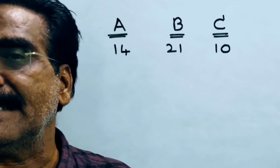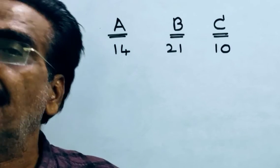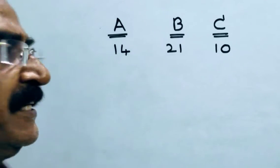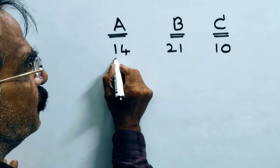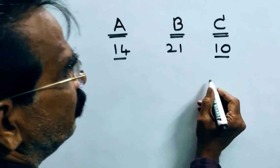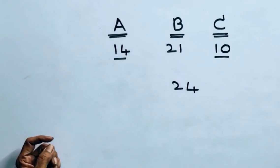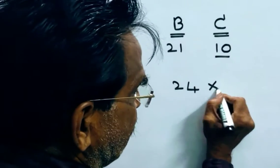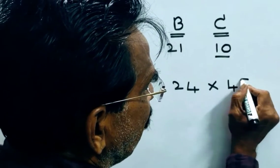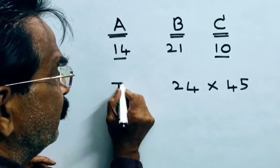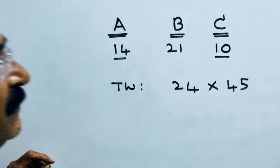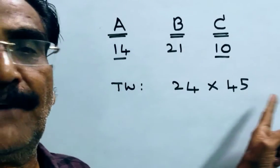Now, it is given that A and C together completed the work in 45 days. A and C together can do 24 units of work per day and they completed the work in 45 days. That means, the total work is 24 into 45.